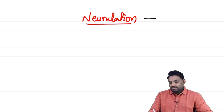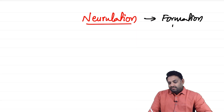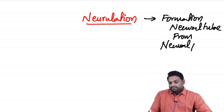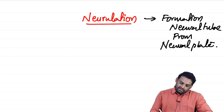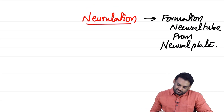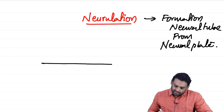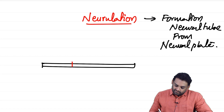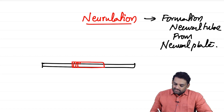The neural tube forms from the neural plate. If we take a picture — this is the surface ectoderm. You can see there is an elevated area on the surface ectoderm, and this elevated area is called the neural plate.